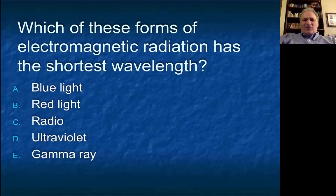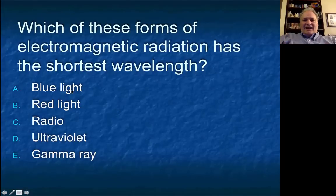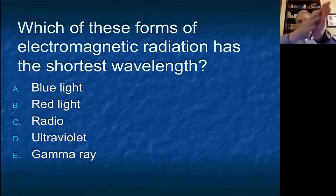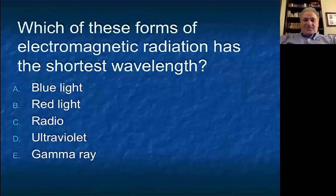Which form of electromagnetic radiation has the shortest wavelength? This is a memorization question about the electromagnetic spectrum. Blue light has shorter wavelength than red light or radio. Ultraviolet is beyond violet — shorter wavelength than blue. But gamma rays are shorter wavelength than anything else. The order from shortest to longest wavelength is: gamma, x-rays, ultraviolet, blue through red (visible), infrared, microwaves, radio. So the answer is gamma rays.